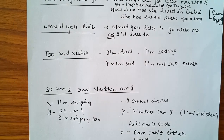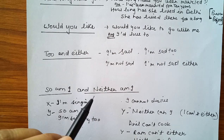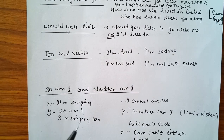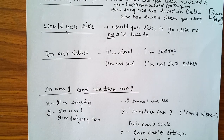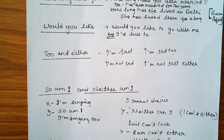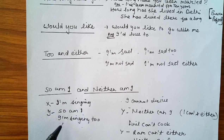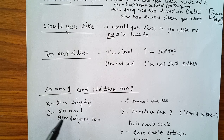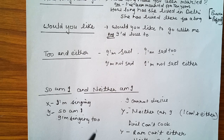Similarly, 'so am I' is used for positive agreement. If I say 'I am singing,' you can respond 'So am I' — meaning you are also singing. Alternatively, you can say 'I am singing too.' Both are acceptable ways to show positive agreement.